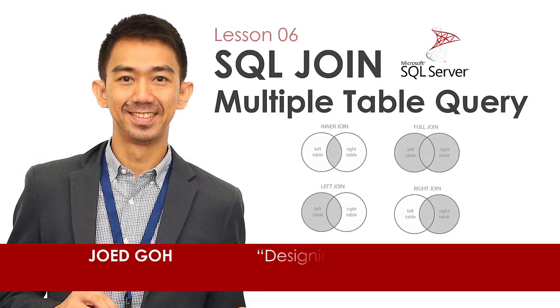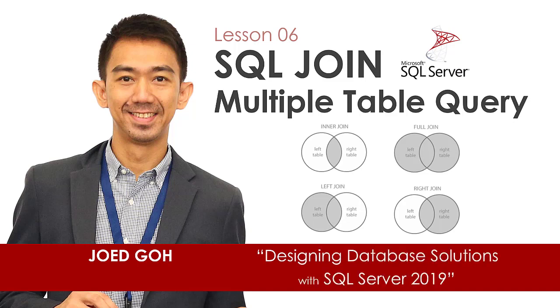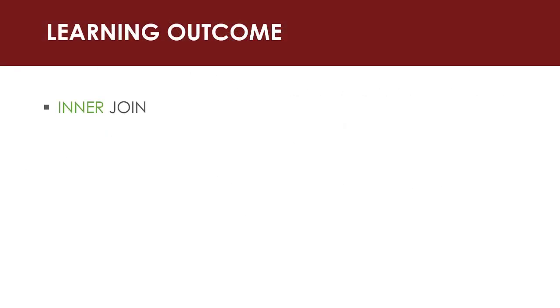Hi again! Welcome to Lesson 6 on Designing Database Solutions with Microsoft SQL Server 2019. For today's topic, you are going to learn how to select records from multiple related tables using SQL inner join and left and right outer join.